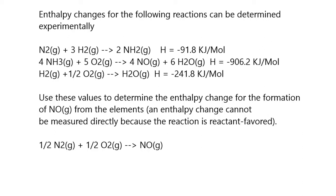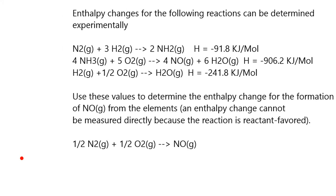The question asks, enthalpy changes for the following reactions can be determined experimentally. So we have three reactions, and their enthalpy changes are each listed here. Use these values to determine the enthalpy change for the formation of NO from the elements. An enthalpy change cannot be measured directly because the reaction is reactant favored, meaning that these are favored more than this. Since we cannot determine the enthalpy change directly, we have to calculate it using Hess's law.